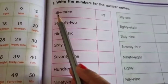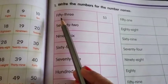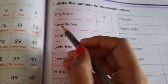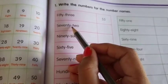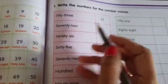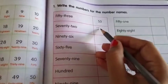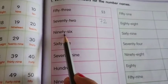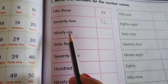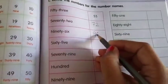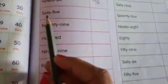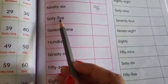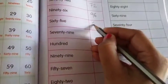Okay, the first one, it has been done in the book itself. FIFTY 50 THREE 3, 53. Next, SEVENTY 70 TWO 2, 72. Next, NINETY 90 SIX 6, 96.